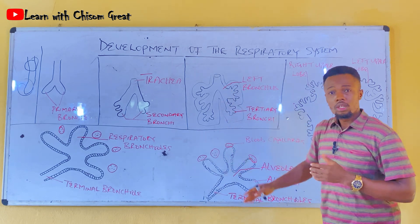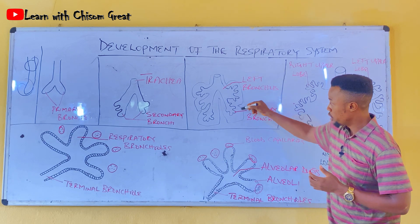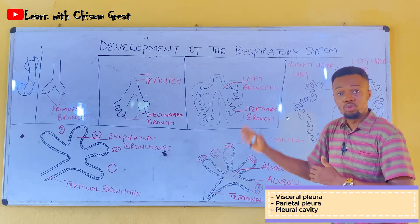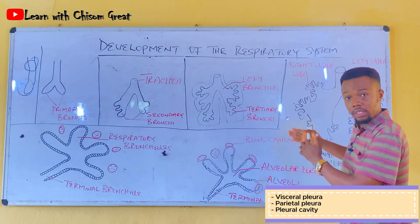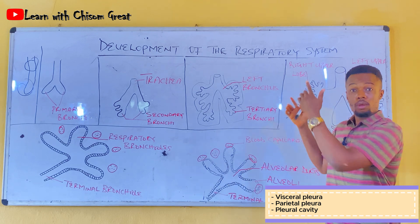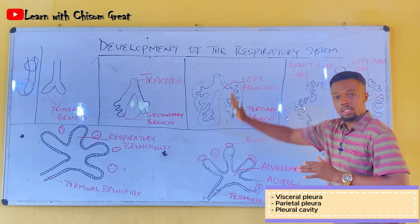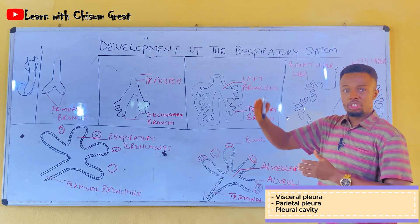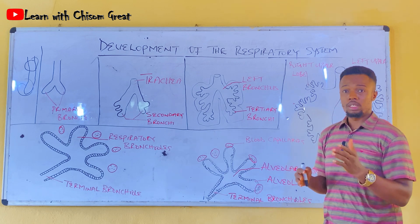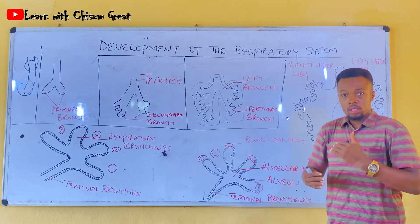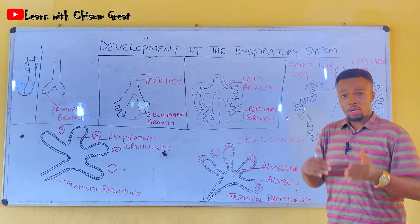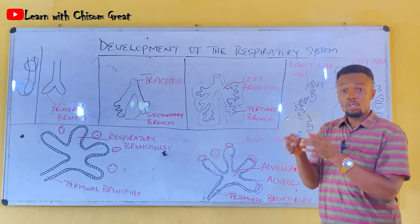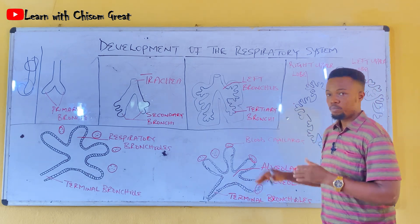The mesoderm surrounding the lungs causes the formation of the visceral pleura. The pleura covering the lungs is purely mesodermal in origin. The cavity formed between the parietal pleura and the visceral pleura is known as the pleural cavity. The pleura helps the lungs move smoothly during inspiration and expiration, reducing surface tension and pressure in the chest.